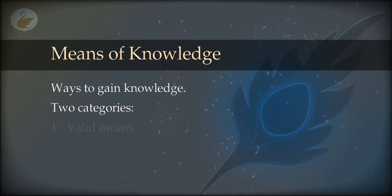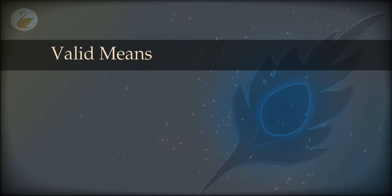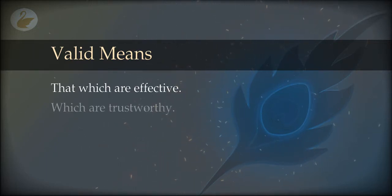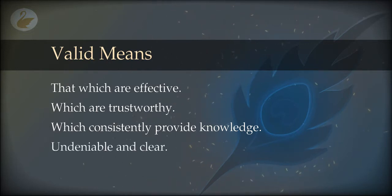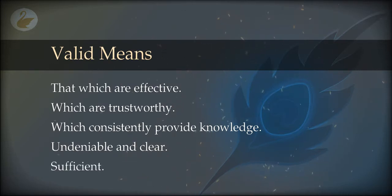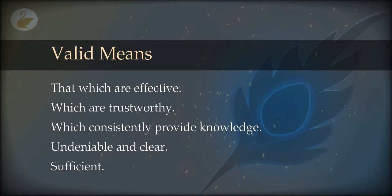The first we call the valid means and the second is the invalid means. The valid means are very effective — they provide us with guaranteed knowledge. They are trustworthy. We go to them again and again. They are consistent and, most importantly, they are undeniable, very clear, and also sufficient. That means we do not need to go to something else to complete the knowledge. These we are going to call the valid means.